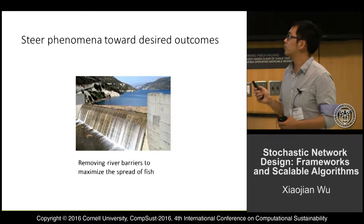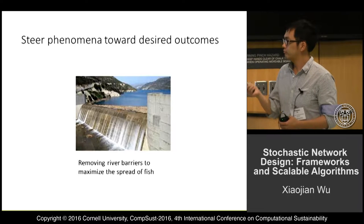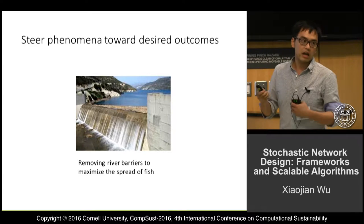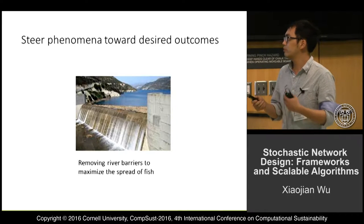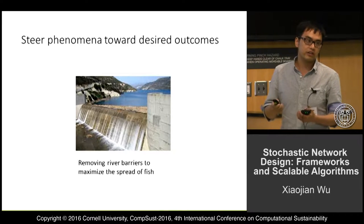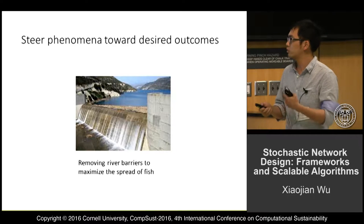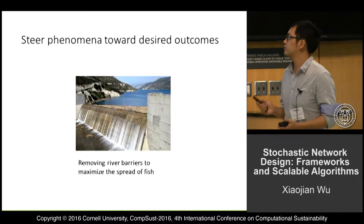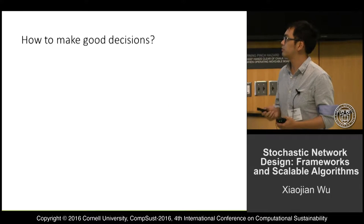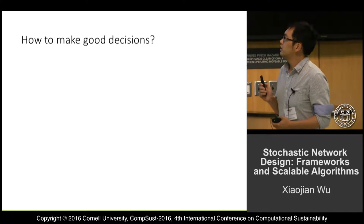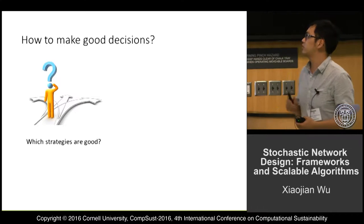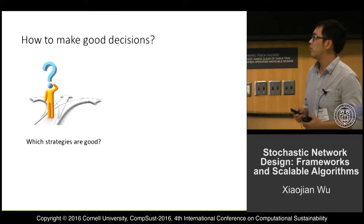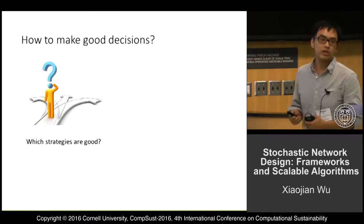That is one example. For the animal example, we may want to improve the connectivity of the network to encourage the dispersal of the species. So the question is: among a large number of candidate strategies, what strategy should we take?